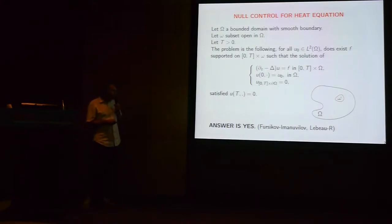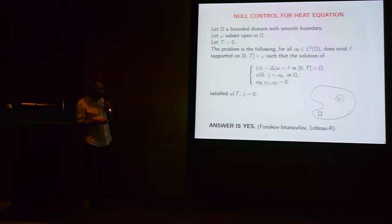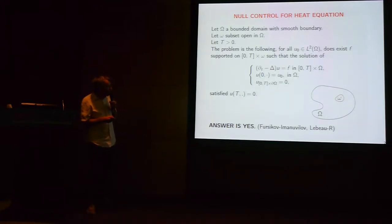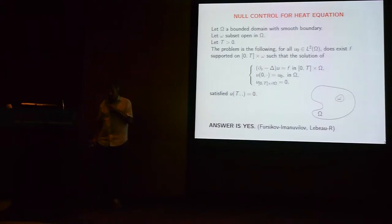This is a result given by Fursikov and Imanuvilov and also with Gilles Lebeau. Both results used Carleman estimates, but different ones. Fursikov and Imanuvilov used Carleman estimates directly on a parabolic equation, while with Gilles Lebeau we used Carleman estimates on an elliptic problem.